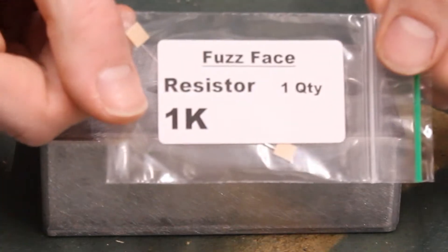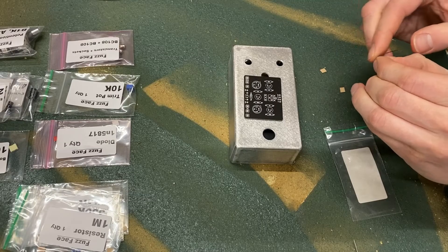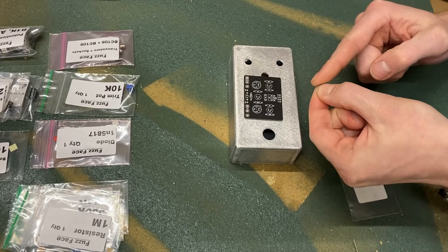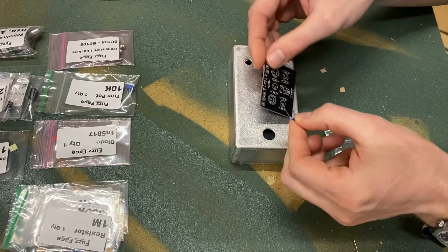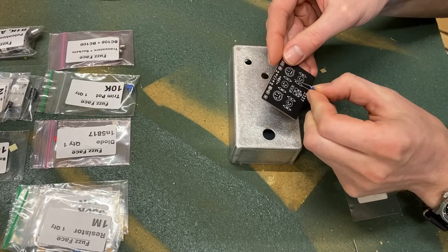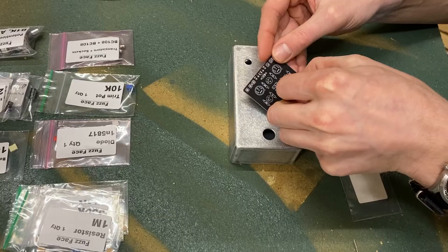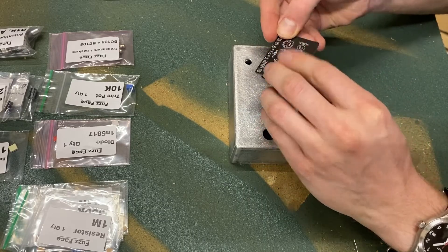Take your 1k resistor and bend the legs close to the blue body and insert into the spot on the PCB marked 1k. You can keep the legs straight or bend them a bit to hold it in place, up to you. Keeping them straight will make it easier to desolder later if necessary.